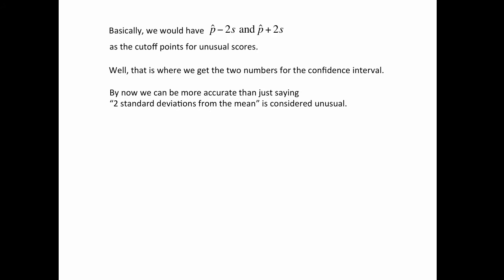But now we can be a little more accurate rather than just saying two standard deviations away. Since we now know how to use table A2, instead of using two, we could be a little more accurate and say, I want to use 1.96 standard deviations, or I want to have it 2.33 standard deviations from the mean. Why those two numbers? If you are using 95% confidence, we would use this. Perhaps you want to be more confident, 98% confidence, then you would use 2.33.